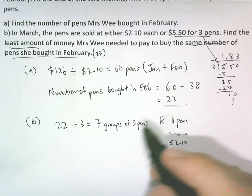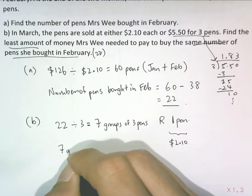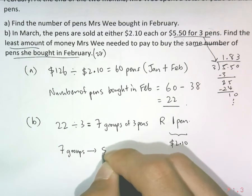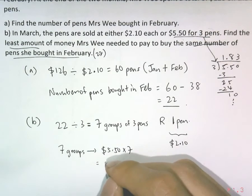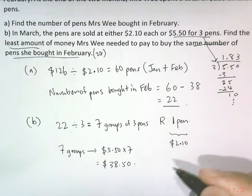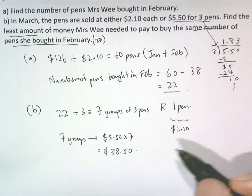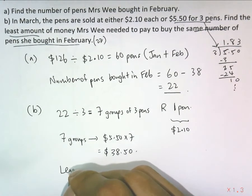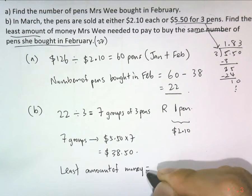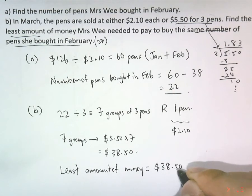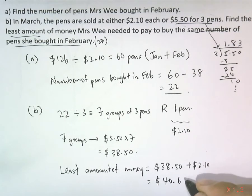For the seven groups of three pens: one group of three pens is $5.50, so seven groups is $5.50 times seven. So to buy the last pen to make up 22 pens total for March, the least amount of money required would be $38.50 plus $2.10, so the minimum is $40.60.